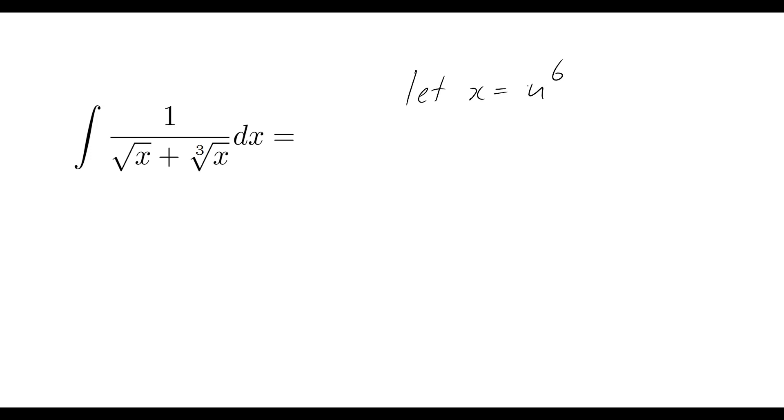So now if I set u to the power of 6 equal to x, then what we see this problem now becomes is the integral of 1 over u cubed plus u squared. Now let's think about dx. So I can say dx du is going to be equal to 6u to the power of 5. And so now instead of writing dx I can just rewrite that as 6u to the 5 du.